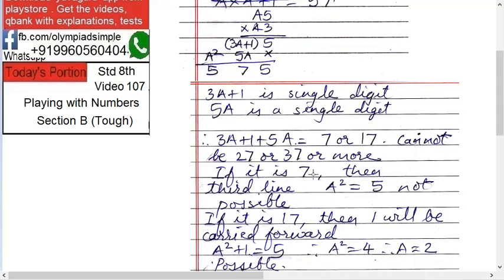Now let's try with 7. If it is 7, then what? Then what remains here? Then the third line is what? A square equals to 5. This is not possible. Why is this not possible? Then what will become? 3A plus 1 plus 5A equals to 7. So 5 plus 3 is 8A, equals to 1 goes over here, 6. So 8A equals to 6, so A becomes 6 by 8. So that's why A square cannot be 5. Then that's why this equals to 7 not possible.